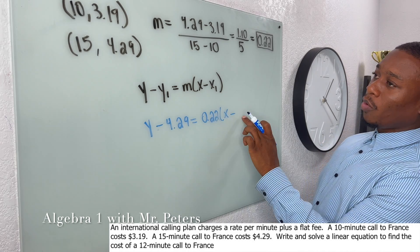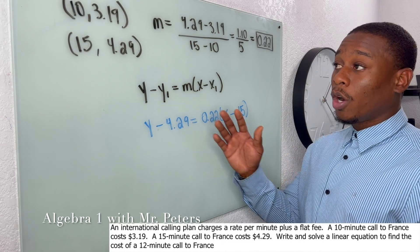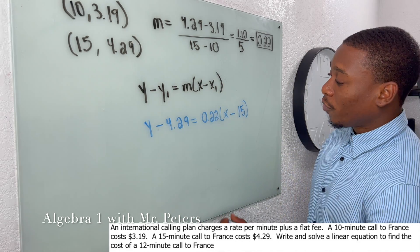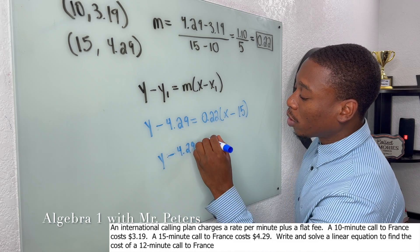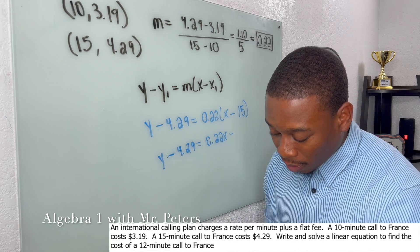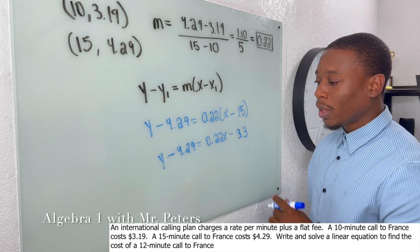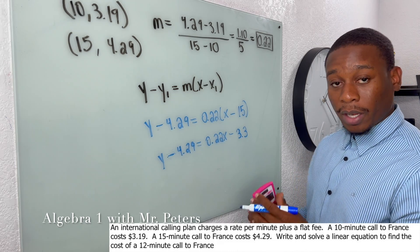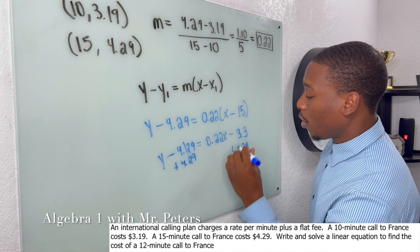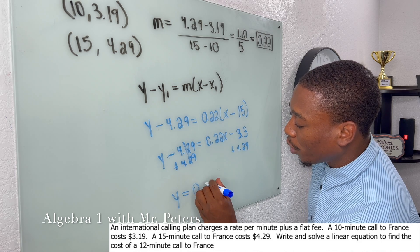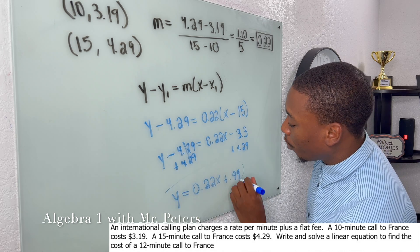We could have used the other ordered pair (10, 3.19) and gotten the same answer. Simplifying: y − 4.29 = 0.22x − 3.30. This is a regular equation and we're just trying to get to the format y = mx + b. When I add 4.29 to both sides, the final equation is y = 0.22x + 0.99.